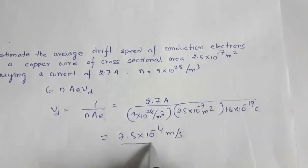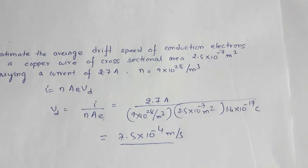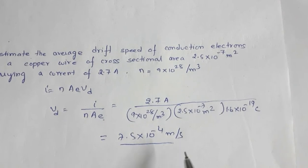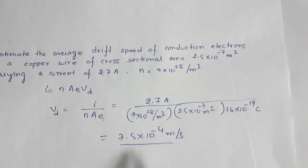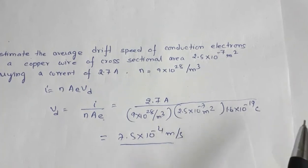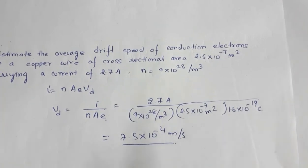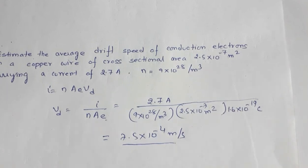A tip for drift velocity problems: the answer will always be of the order of a few millimeters per second. You will never get drift velocity as high as 2 or 20 m/s, so if you get an answer near 10⁻⁴ m/s, your calculation is likely correct. These are solutions from 2014 to 2018 from the chapter current electricity. I hope this benefits your performance in the forthcoming board examinations. Best wishes and good luck.